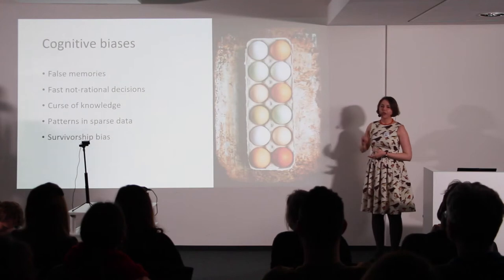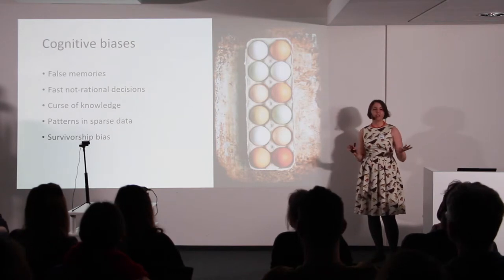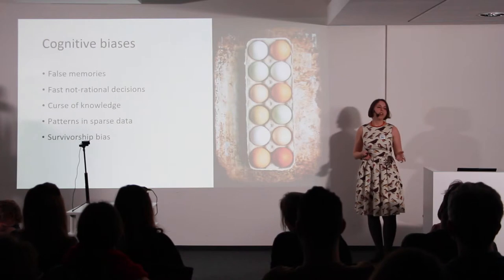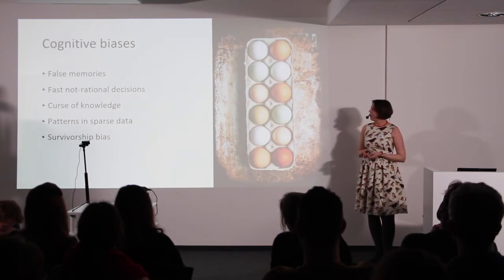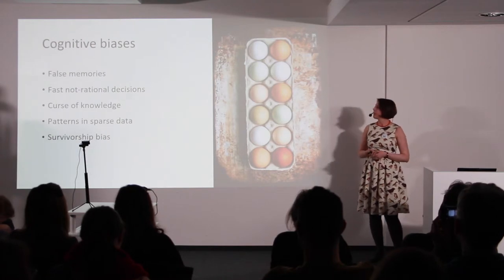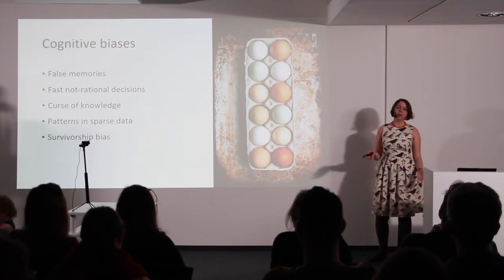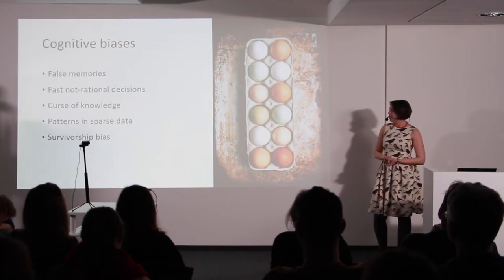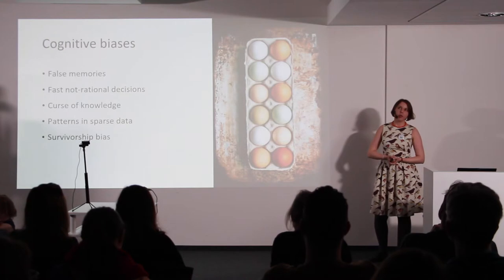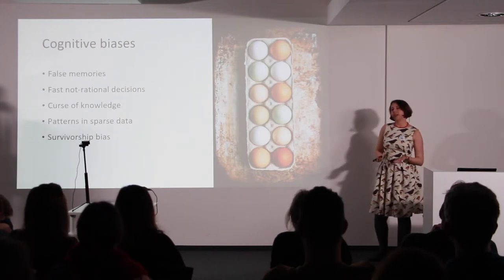We've now gone through several cognitive biases. To recap: we talked about false memories — remember the people who thought they picked the card they actually never picked. We saw that fast, non-rational decisions are prompted by our environment and our life, and often these can be wrong or at least non-rational decisions. We experienced the curse of knowledge, with the 15x4 example but perhaps also in your own life. We are looking for patterns in sparse data — this is why we have superstitions, or why gamblers come up with rules they believe will help them win. And we talked about survivorship bias with the airplane example, which also applies to many other areas of our lives.